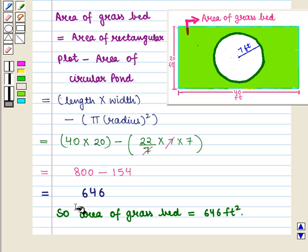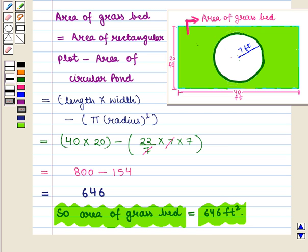So this is equal to 646. So we can say that area of grass bed is equal to 646 square feet.